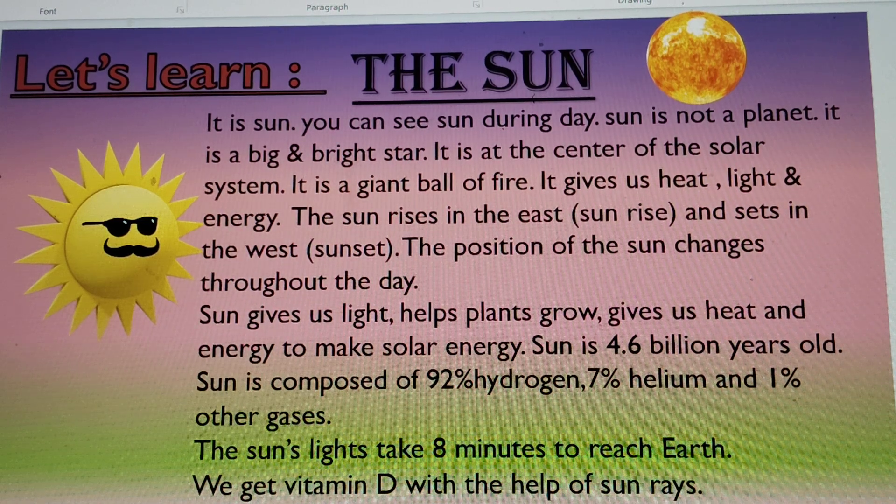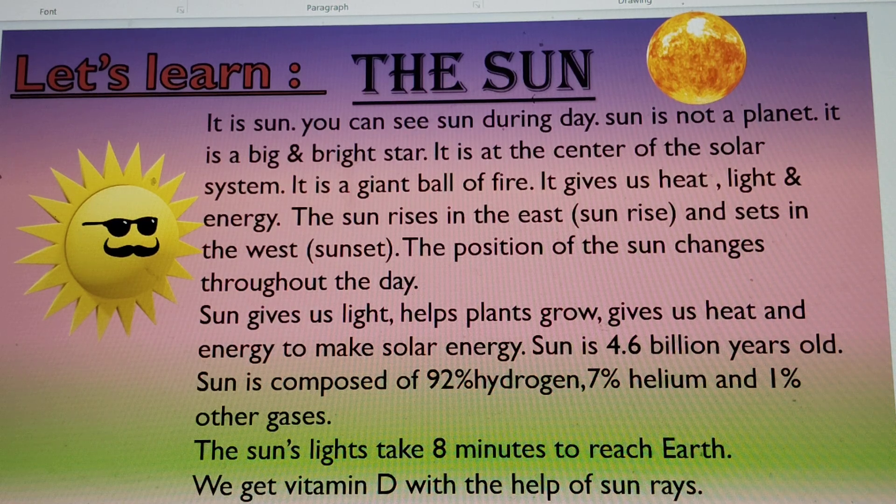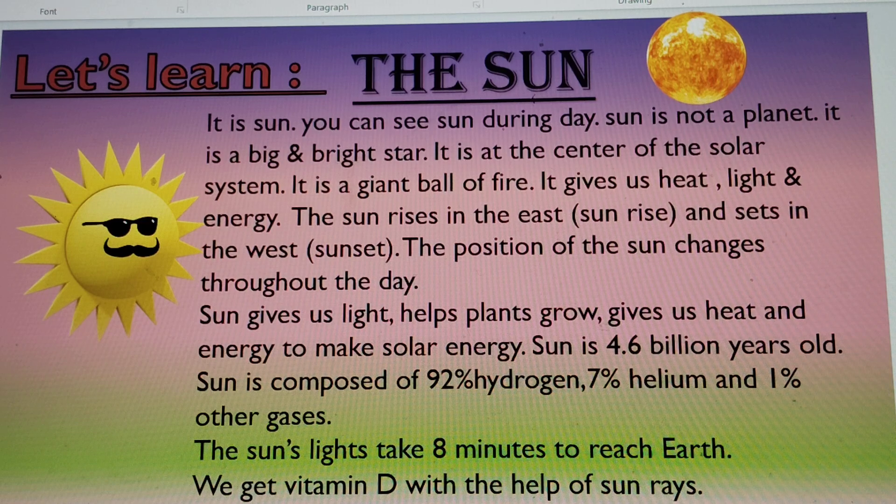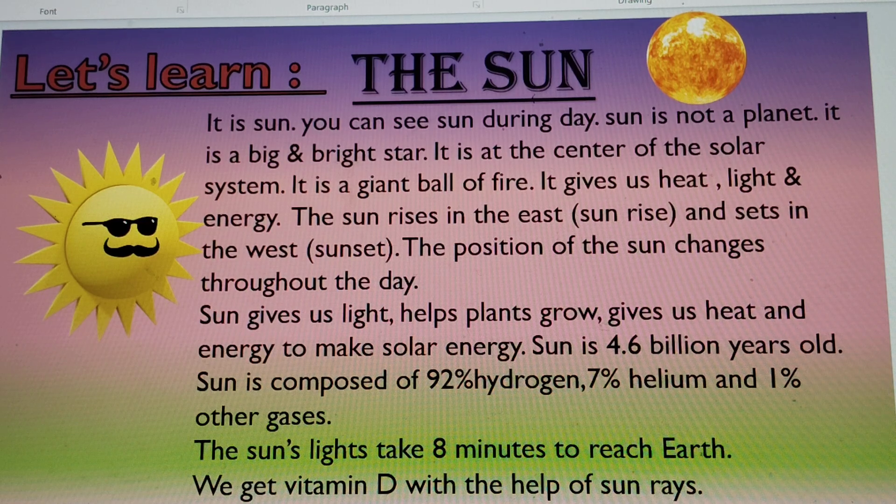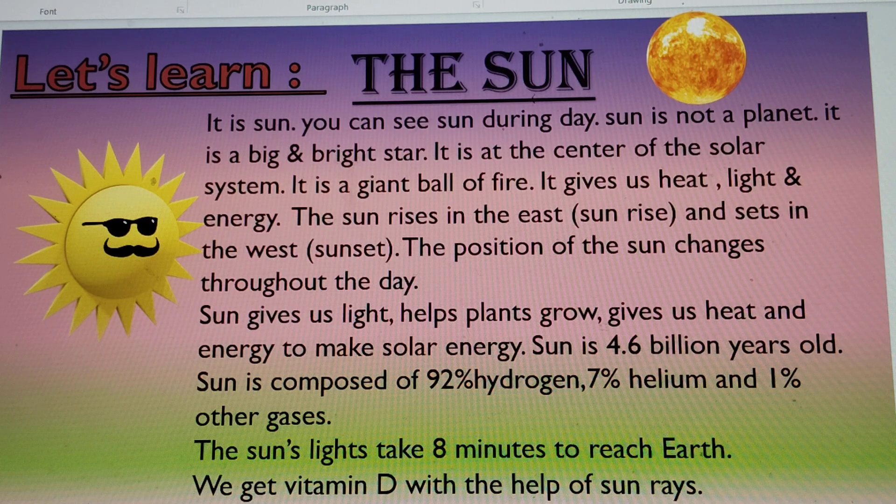Sun is not a planet. We call it a star. It's a big and bright star because it is at the center of the solar system. It is a giant ball of fire. It is made up of or composed of 92% of hydrogen, 7% of helium and 1% of other gases.